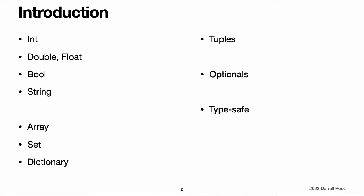Tuples enable you to create and pass around groupings of values. You can use a tuple to return multiple values from a function as a single compound value. Swift also introduces optional types, which handle the absence of a value. Optionals say either there is a value and it equals x, or there is not a value at all. Using optionals is similar to using nil with pointers in Objective-C, but they work for any type, not just classes. Not only are optionals safer and more expressive than nil pointers in Objective-C, they are at the heart of many of Swift's most powerful features.